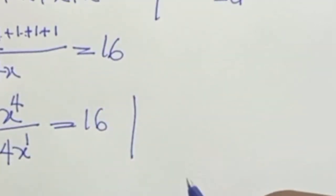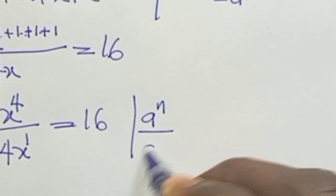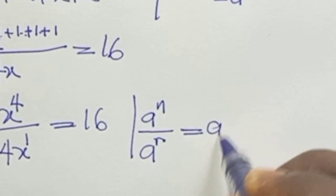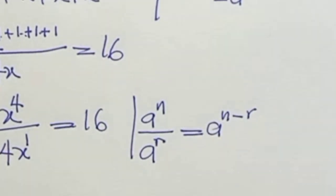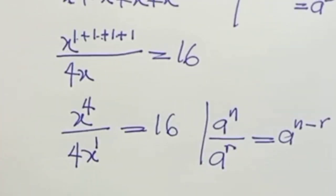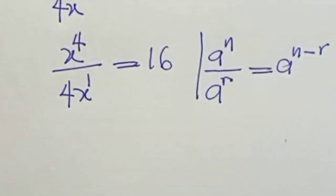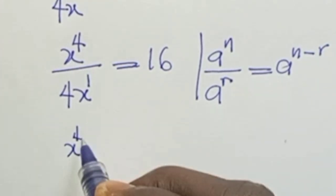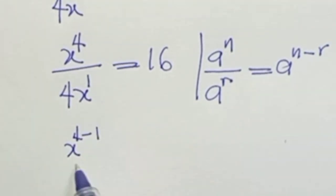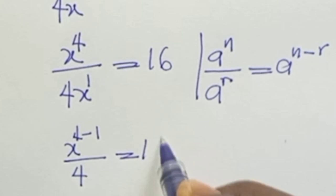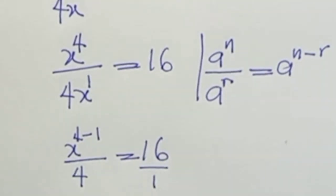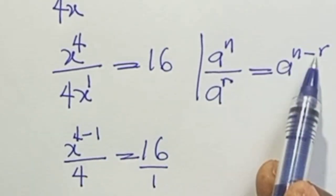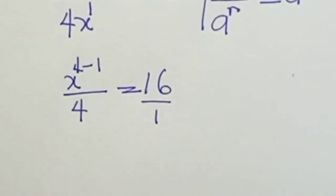The next line: 1+1+1+1 will be 4, all over 4s raised to power 1, equal to 16. And again, a raised to power n over a raised to power r equals a raised to power n minus r. So the next line will become s raised to power 4 minus 1, all over 4, equal to 16, since the bases are the same.